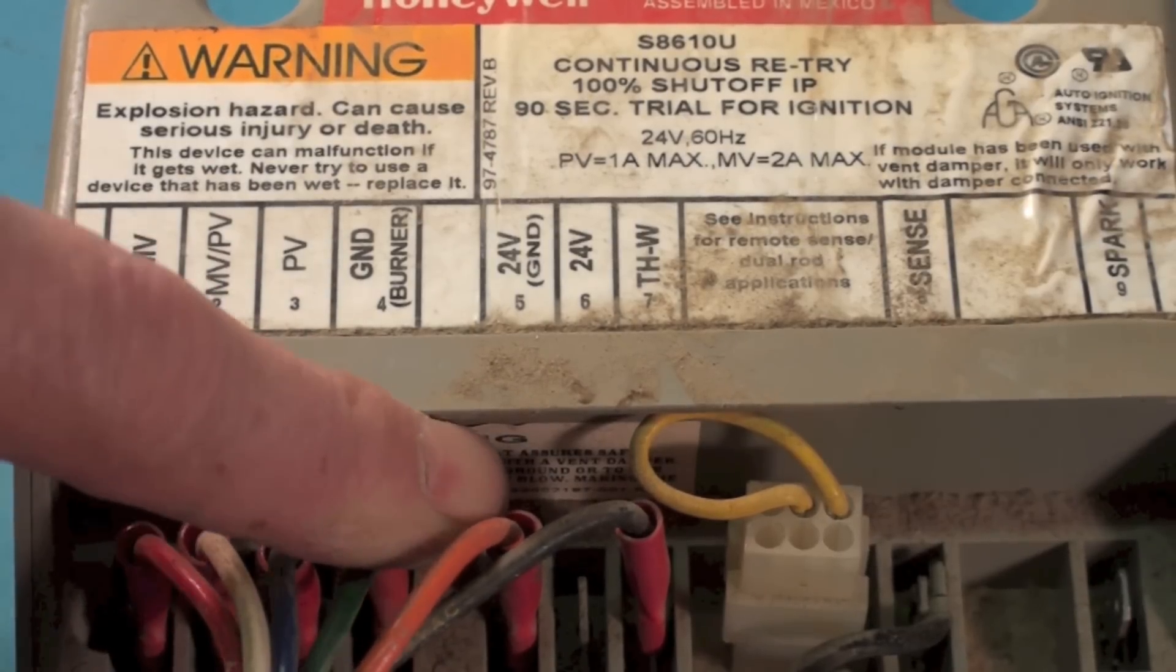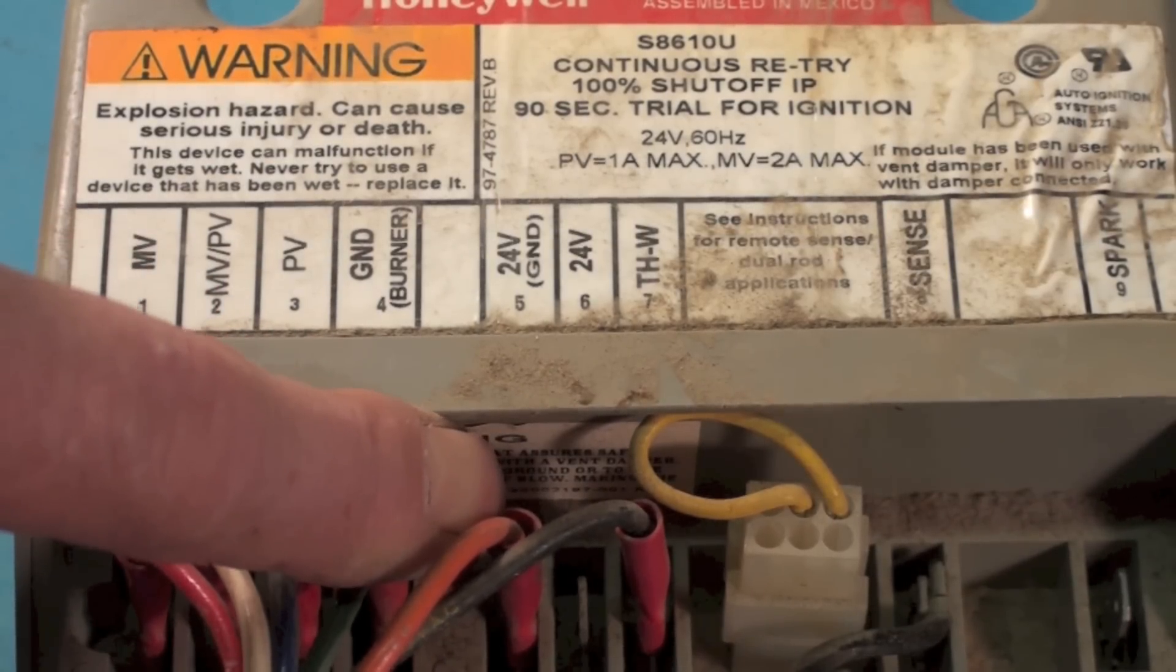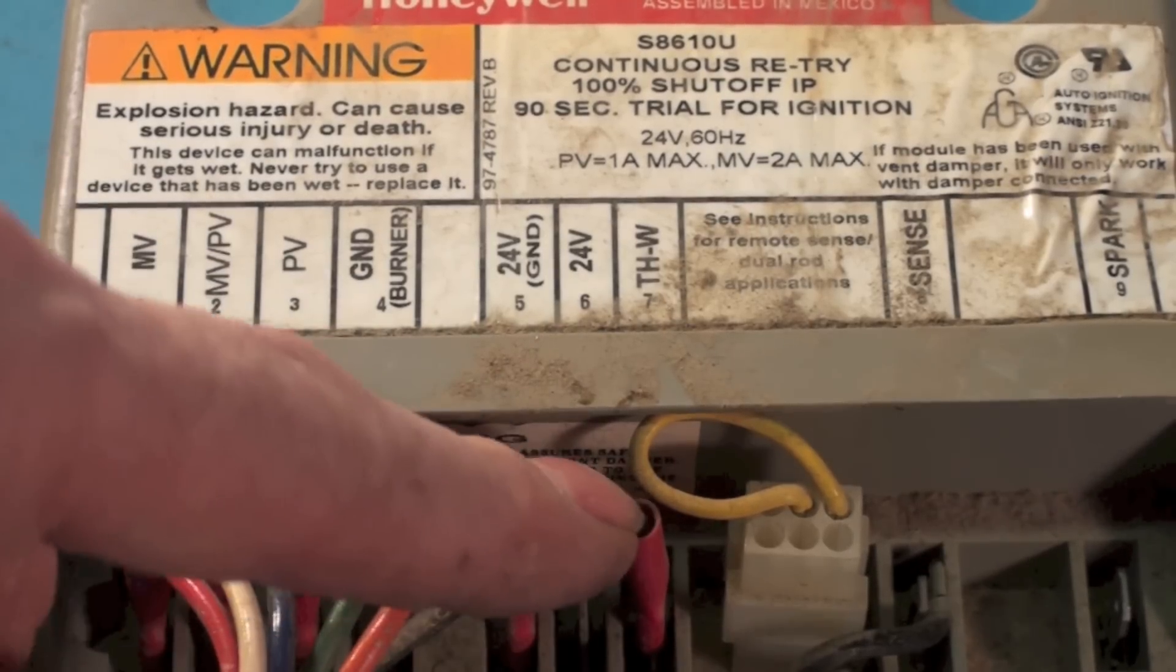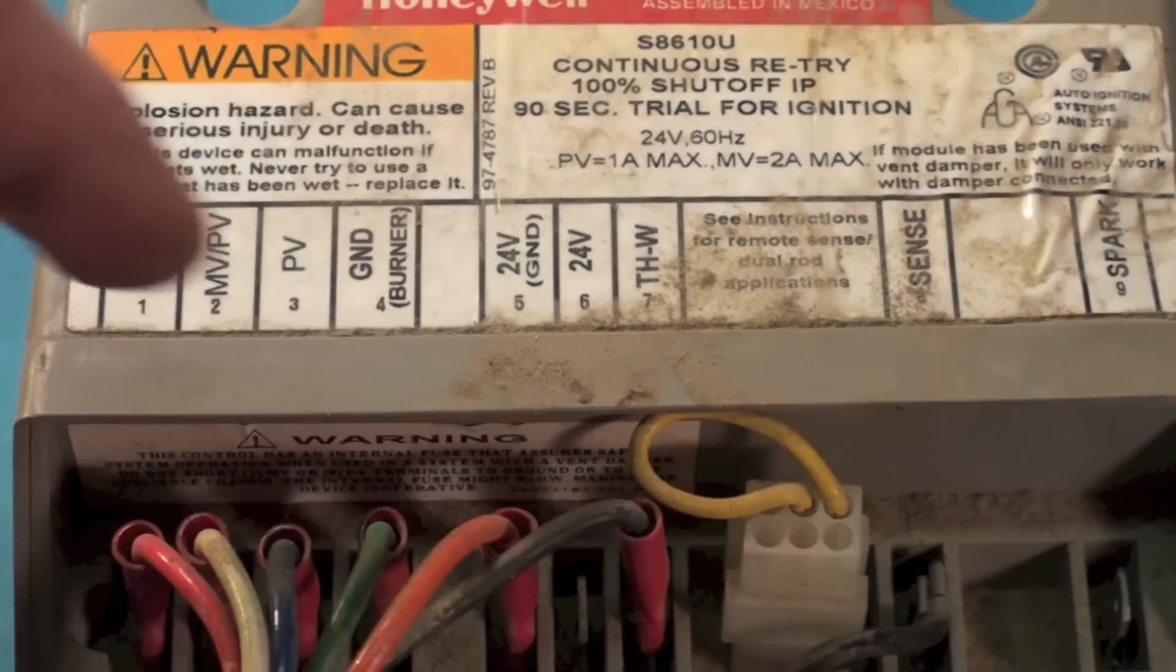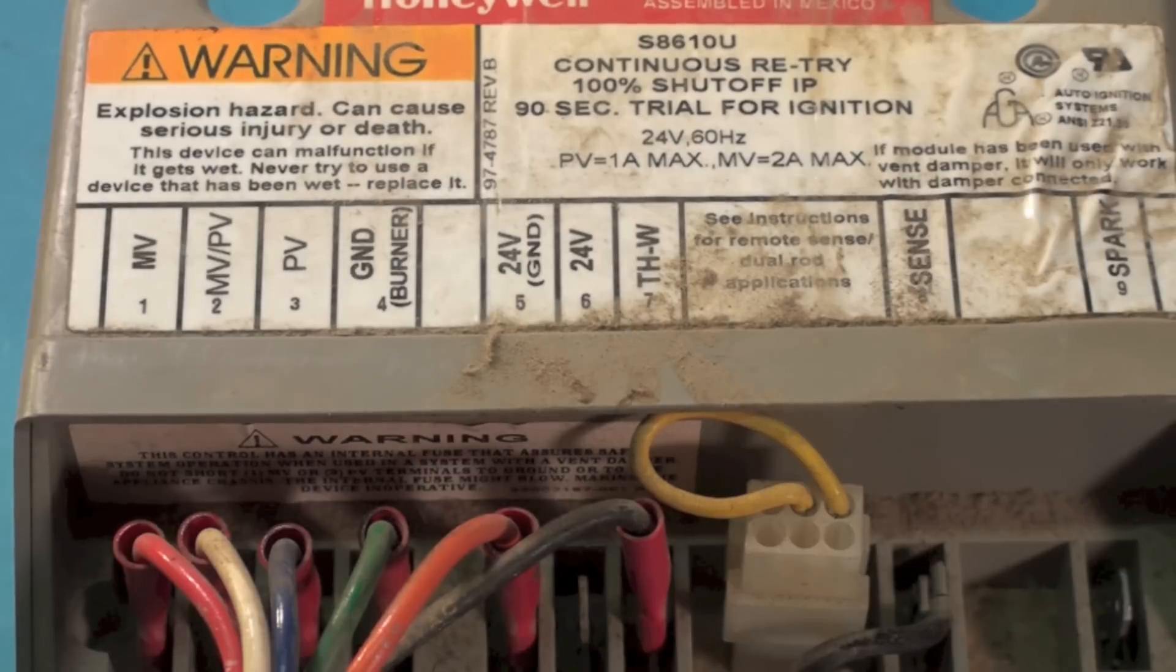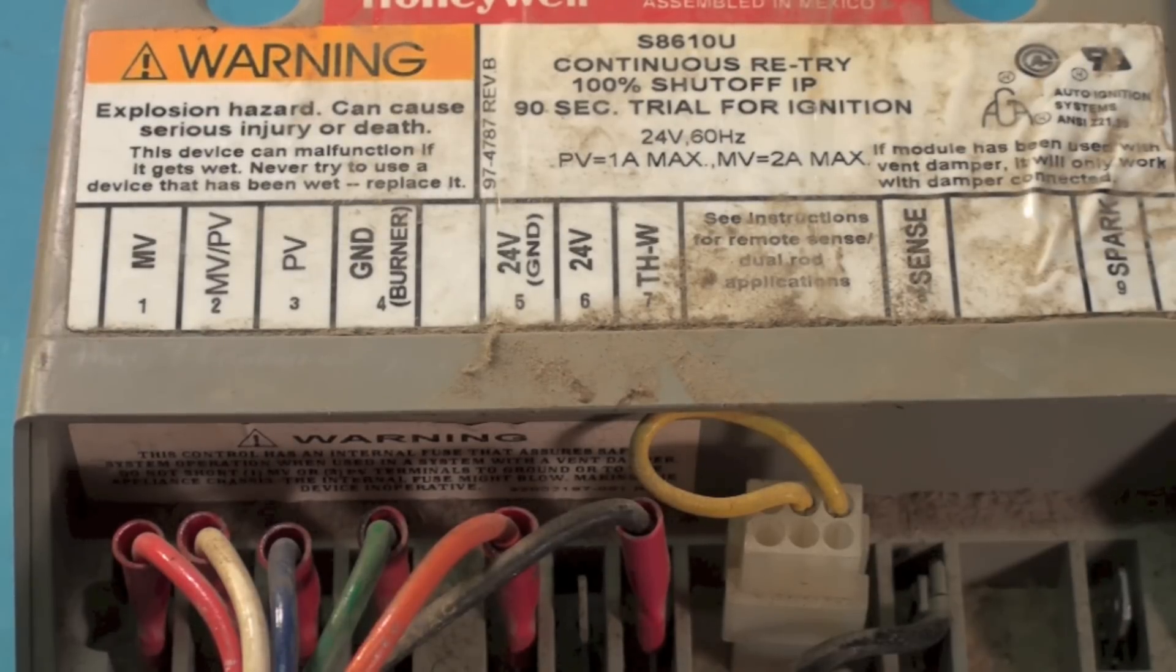We got the 24 volt ground, which means it has to be the common side of 24 volts, and then 24 volt. You can either use 24 volt or THW; either one seems to work. I don't know why they set them up that way, but they did.